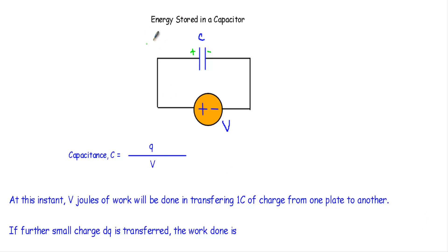In this video I will talk about energy stored in a capacitor, and I will show you the energy storage equation of a capacitor. Let's say I have a parallel plate capacitor here. This parallel plate capacitor has capacitance C, and between these two parallel plates there will be an insulating or dielectric medium. Now if I connect this capacitor with a DC voltage source — this is the positive terminal of the source and this is the negative terminal — the positive terminal will attract the electrons from this plate towards it.